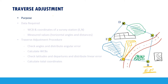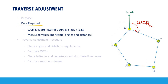Now you know the aim of traverse is to calculate the coordinates of each survey station. To do this, you need some measurements from the ground. First, you need the coordinates of one known station — you always start from a known point. You also need a whole circle bearing of one side of the traverse. The whole circle bearing is simply an angle measured from the north, clockwise towards the side.